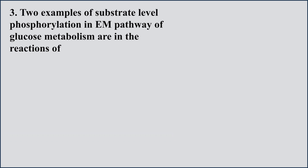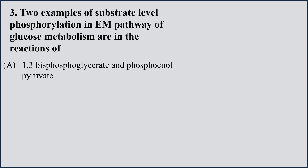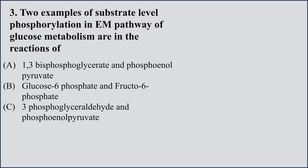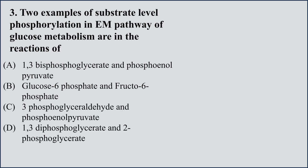Question number 3: Two examples of substrate level phosphorylation in the EM pathway (Embden-Meyerhof pathway, the second name for glycolysis) of glucose metabolism are in reactions: A) 1,3-bisphosphoglycerate and phosphoenolpyruvate; B) glucose-6-phosphate and fructose-6-phosphate; C) glyceraldehyde-3-phosphate and phosphoenolpyruvate; D) 1,3-diphosphoglycerate and 2-phosphoglycerate.